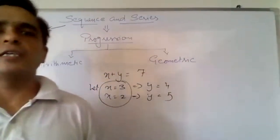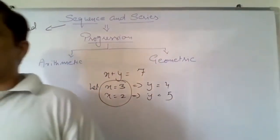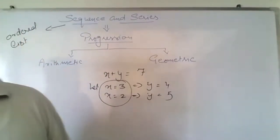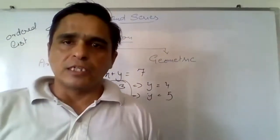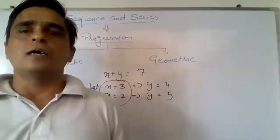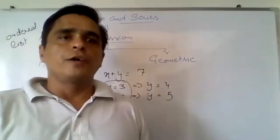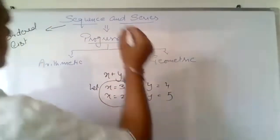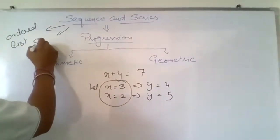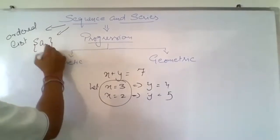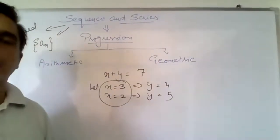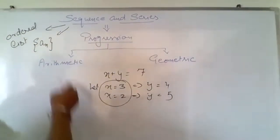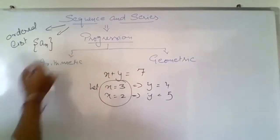A sequence is the ordered list of numbers whose domain is the subset of natural numbers. Generally, a sequence is denoted by curly brackets with a_n inside — written as {a_n}.